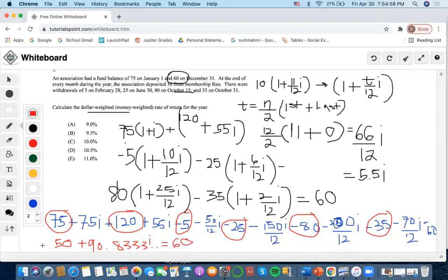Now 60 minus 50 is 10, which means that we would divide 10 by this amount. So 10 divided by 90.8333, which is 0.11, which in all is 11%.